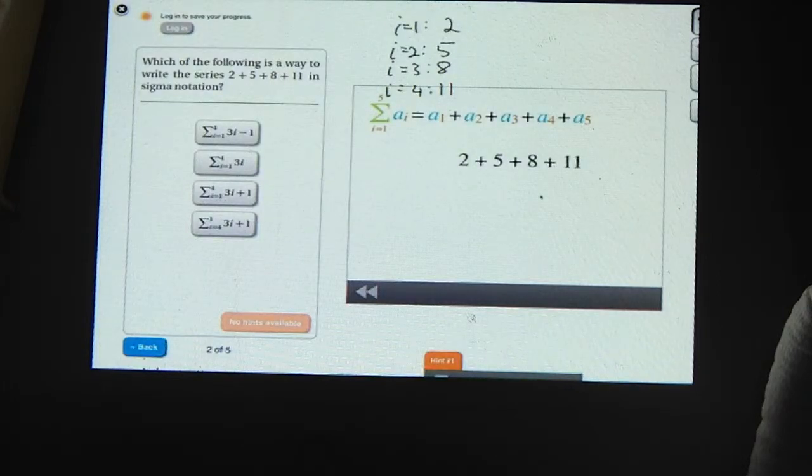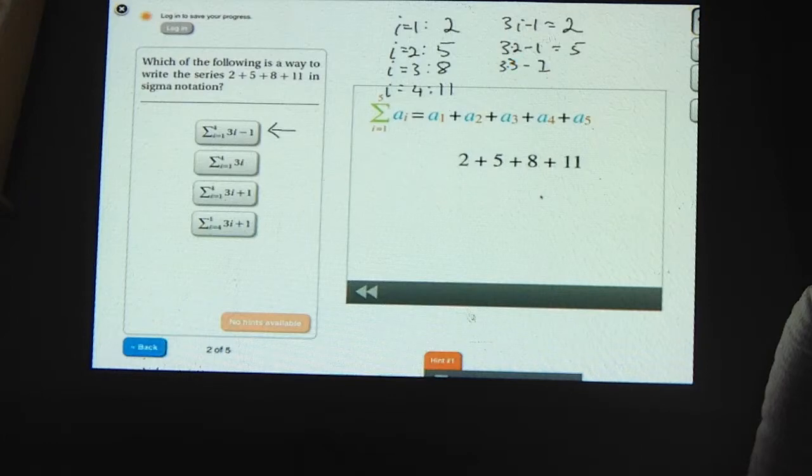Let's start with the first one. The first one says the i equals 1 term is 3i minus 1. And when i equals 1, that's 2. That seems to be good. What's the second term? When i equals 2, we get 3 times 2 minus 1, which is 5. 3 times 2 minus 1 is 5. That's still good. So this is looking pretty good. The third term is 3 times 3 minus 1, which is 8. And the fourth term is 3 times 4 minus 1, which is 11. So this one seems to work.